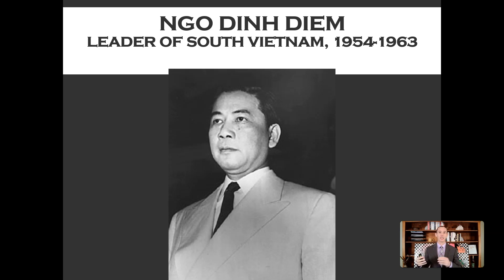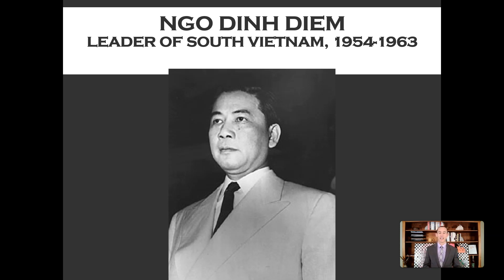Diem was Catholic and he put all Catholics in leadership positions in a country that was predominantly Buddhist. He did not represent the majority of the population. The way colonized countries worked was that the colonizer would get a part of the population to support them and put them in leadership roles. Diem did not represent the people in South Vietnam. He was so unpopular that by 1955, it became obvious he would not win elections scheduled for 1956, so he just called them off and held his own elections in South Vietnam — overseen by his own government.